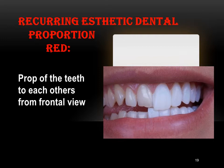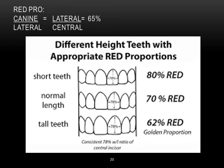I have what we call RED proportion — Recurring Aesthetic Dental proportion. RED proportion is the proportion of the teeth to each other from the frontal view. The width of my restoration for the central, lateral, and canine should have a certain proportion to each other. The proportion of the canine to the lateral should equal the proportion of the lateral to the central. The standard proportions are 80%, 70%, and 62%.